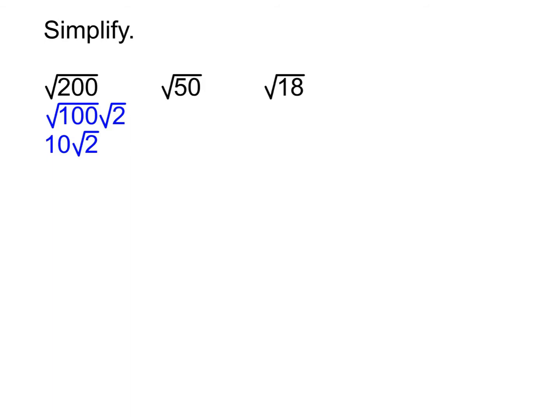All right, so next up the root 50. We again look for the biggest perfect square that goes into 50, and what is that? It is 25. So that one ends up being root 25 root 2. So 5 root 2 for that simplified form.